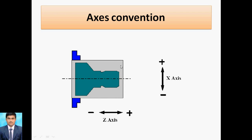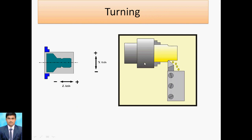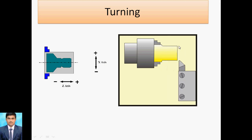For the diameter approach, we use diametral programming. That's why X is taken as a diameter. Suppose we have a certain diameter — we mention that diameter as X. For Z we take the distance, that length as minus Z. So when the tool moves from one point to another, Z is in the negative direction, and X is referred to as a diameter — initial and final diameter — so we mention only the final diameter.